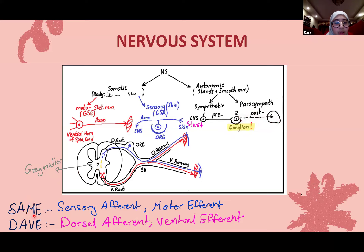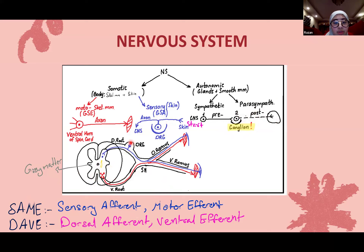A useful mnemonic: sensory neurons are afferent — signals enter. Motor neurons are efferent — signals exit. Dorsal structures (dorsal root ganglion, dorsal horn) are associated with afferent neurons. Ventral structures (ventral horn, ventral root) are associated with efferent neurons. Remembering dorsal = afferent and ventral = efferent will help you answer many questions.